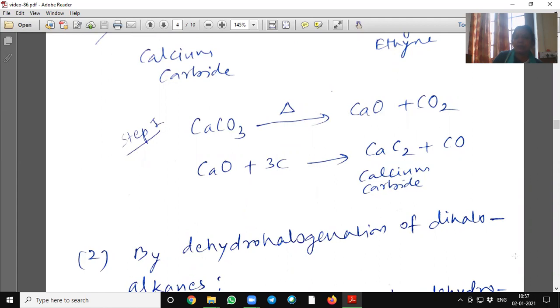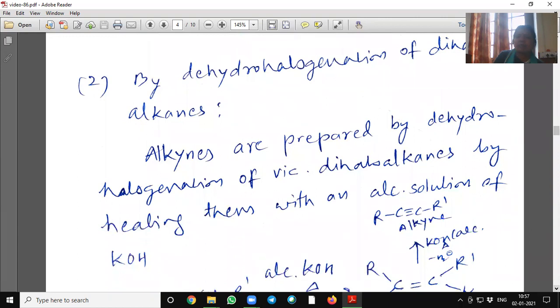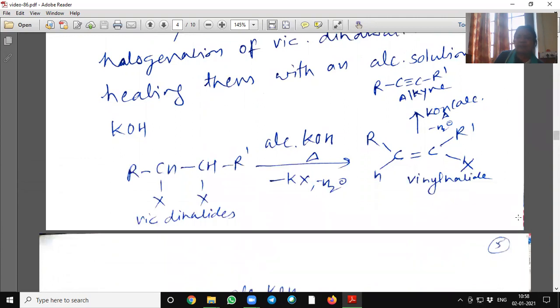This calcium oxide is further reacted with 3 moles of carbon. It will convert it into calcium carbide and carbon monoxide. By dehydrohalogenation of dihaloalkanes. Alkynes are prepared by dehydrohalogenation of vicinal dihaloalkanes by heating them with an alcoholic solution of KOH.